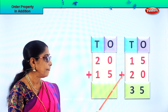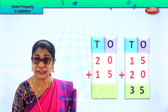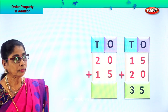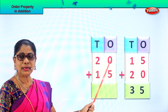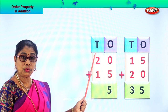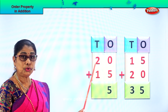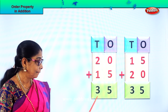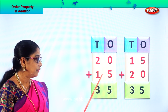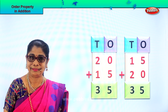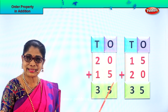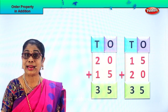So your answer is 15 plus 20 equals 35. Now what is 20 plus 15? Let's add all the ones: 0 ones plus 5 ones — 0 plus 5 is 5. Then 2 tens plus 1 ten: 2 plus 1 is 3 tens, which gives 35. Whether you add 15 plus 20 or 20 plus 15, your answer is 35. Order property of addition!